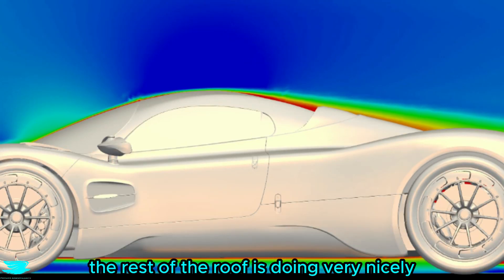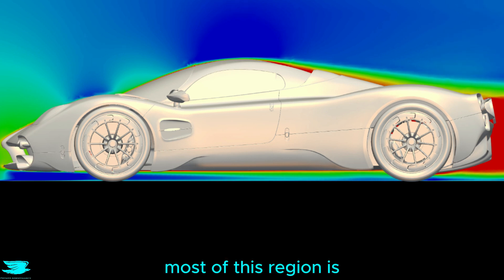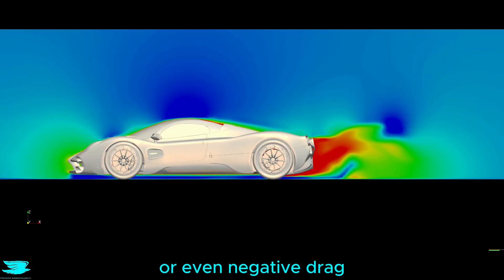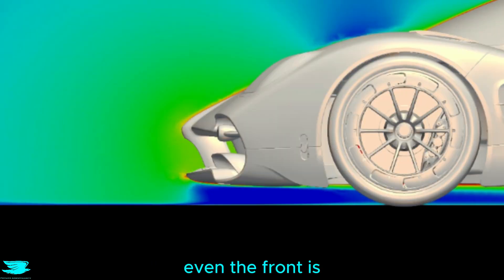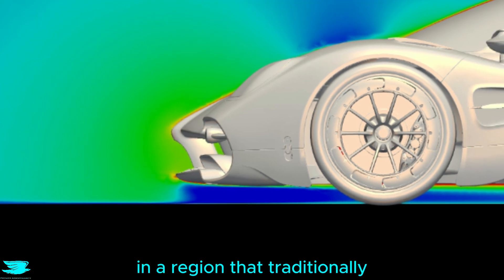The rest of the roof is doing very nicely, as is the underbody, where most of this region is producing near zero or even negative drag. Even the front is doing quite well, because it is producing only moderate drag in a region that traditionally produces a lot of drag.